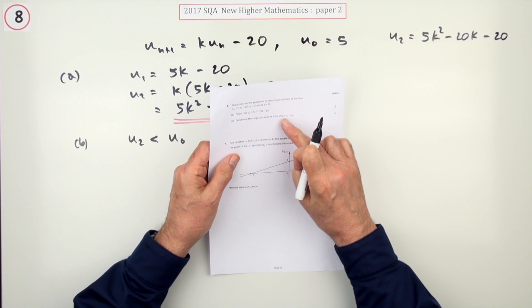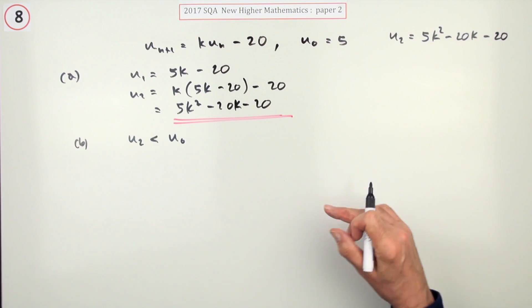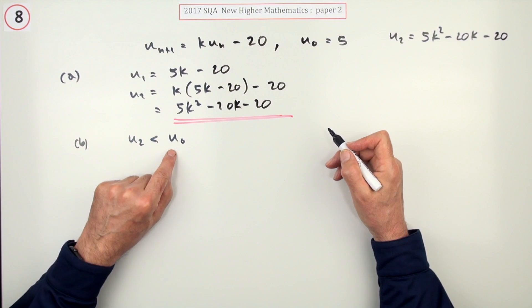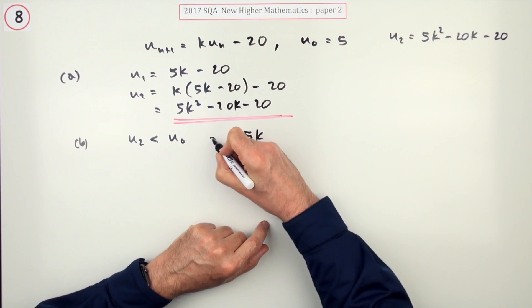Now part b: determine the range of values of k for which u2 is less than u0. It's a quadratic inequality. u2 is less than u0 means this is less than 5, so I've got this. This means 5k squared minus 20k minus 20 is less than 5.